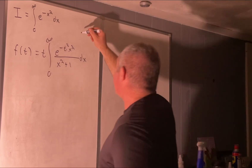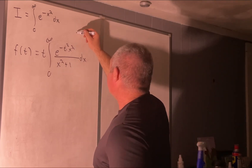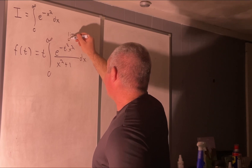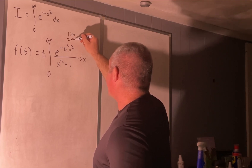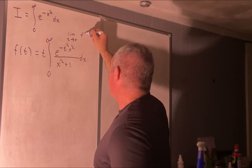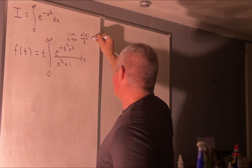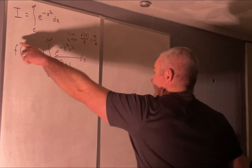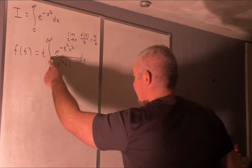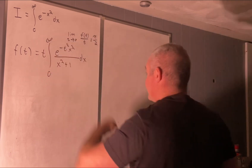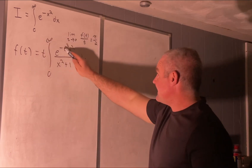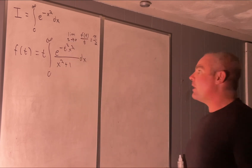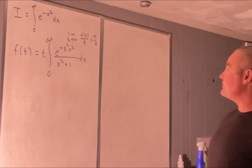We will notice that if we take the limit as T approaches zero of F(T) over T, we'll get pi over 2. Because if you take our F(T), which is this thing, divide it by T — that would cancel that T — and take the limit as T approaches zero, you'd get the integral from zero to infinity of 1 over X squared plus 1, DX, which is pi over 2.